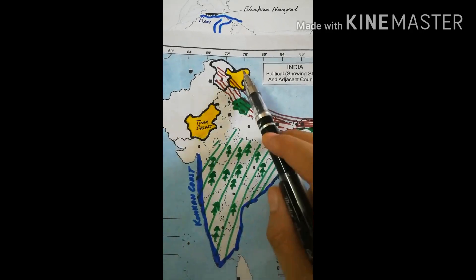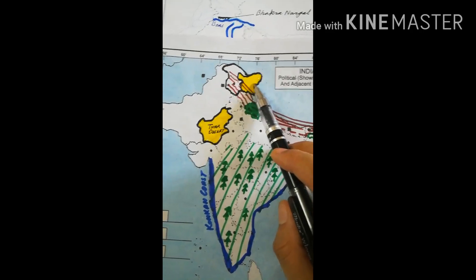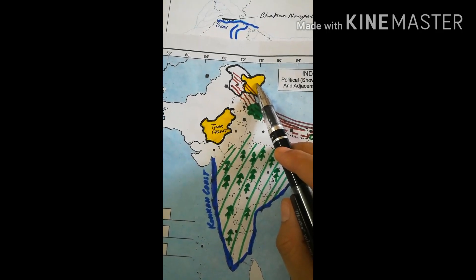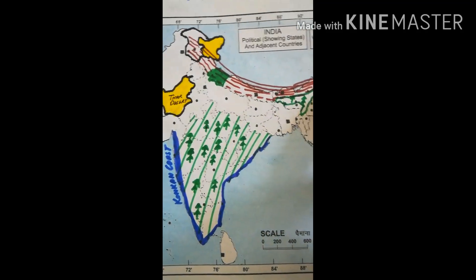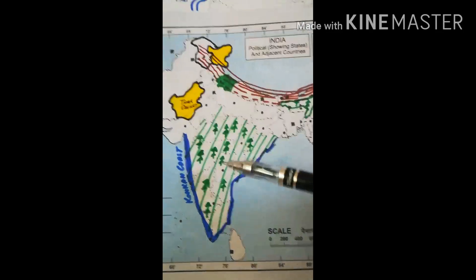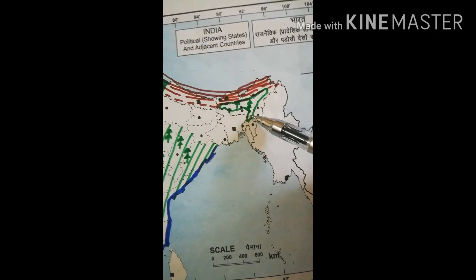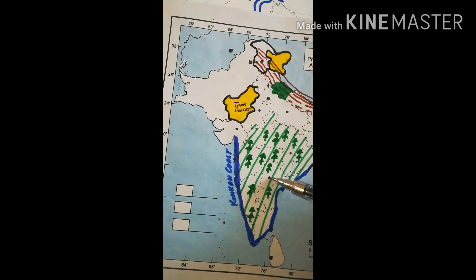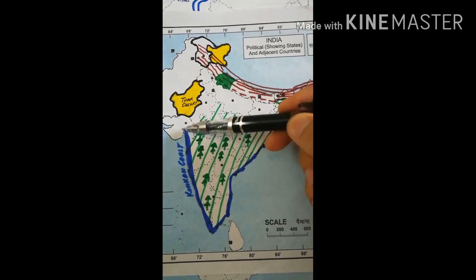We also have the Thar Desert in Rajasthan, shown with yellow color. This is the Rajasthan area. And this is also Ladakh desert, shown in yellow. These mountains here — do you remember? These are the Himalayas, shown with brown color. This green color I have shown covers an entire area of forest. And this is the coastal area — the Western Ghats, the Konkan coast, and the Coromandel coast.